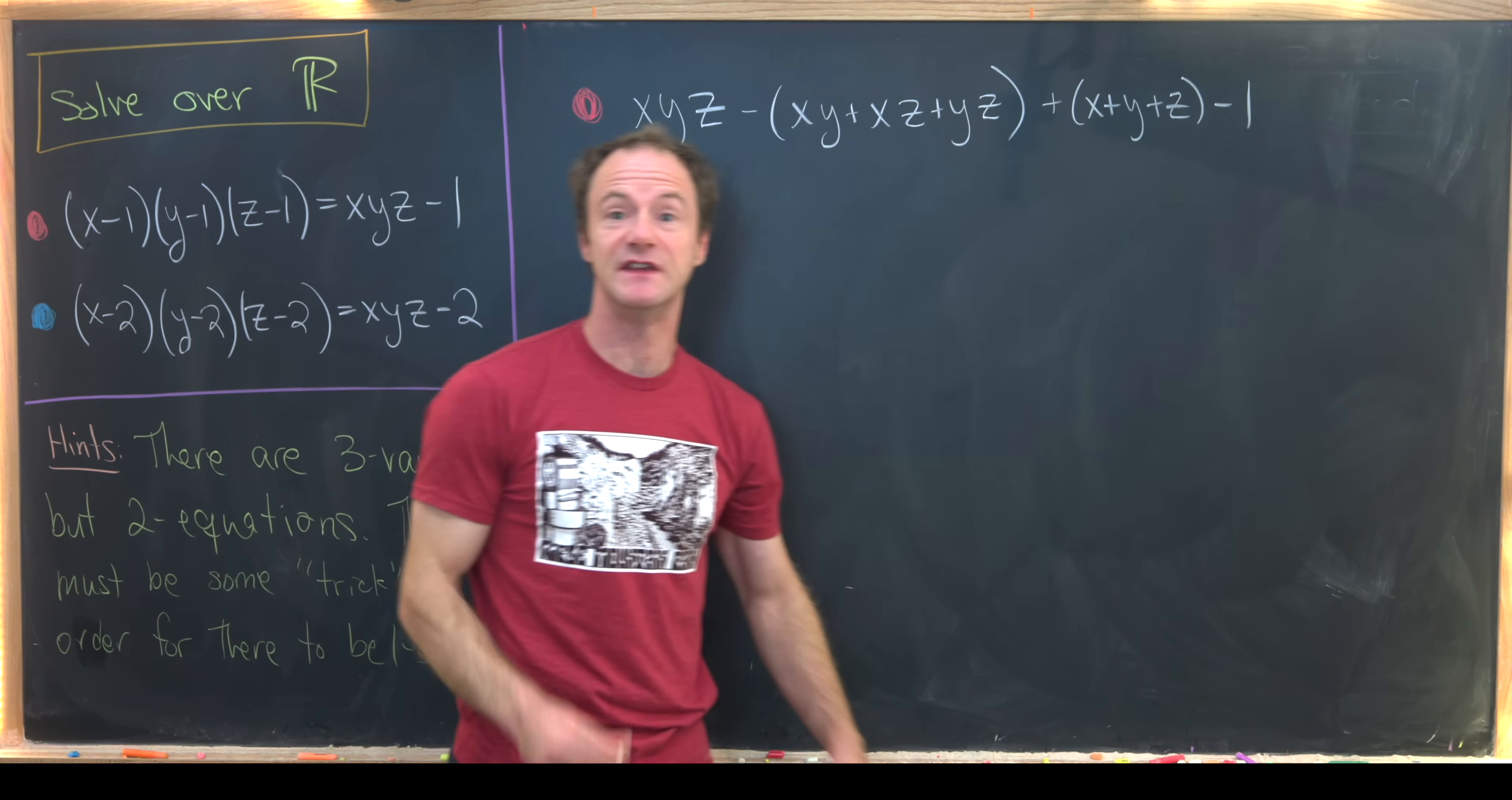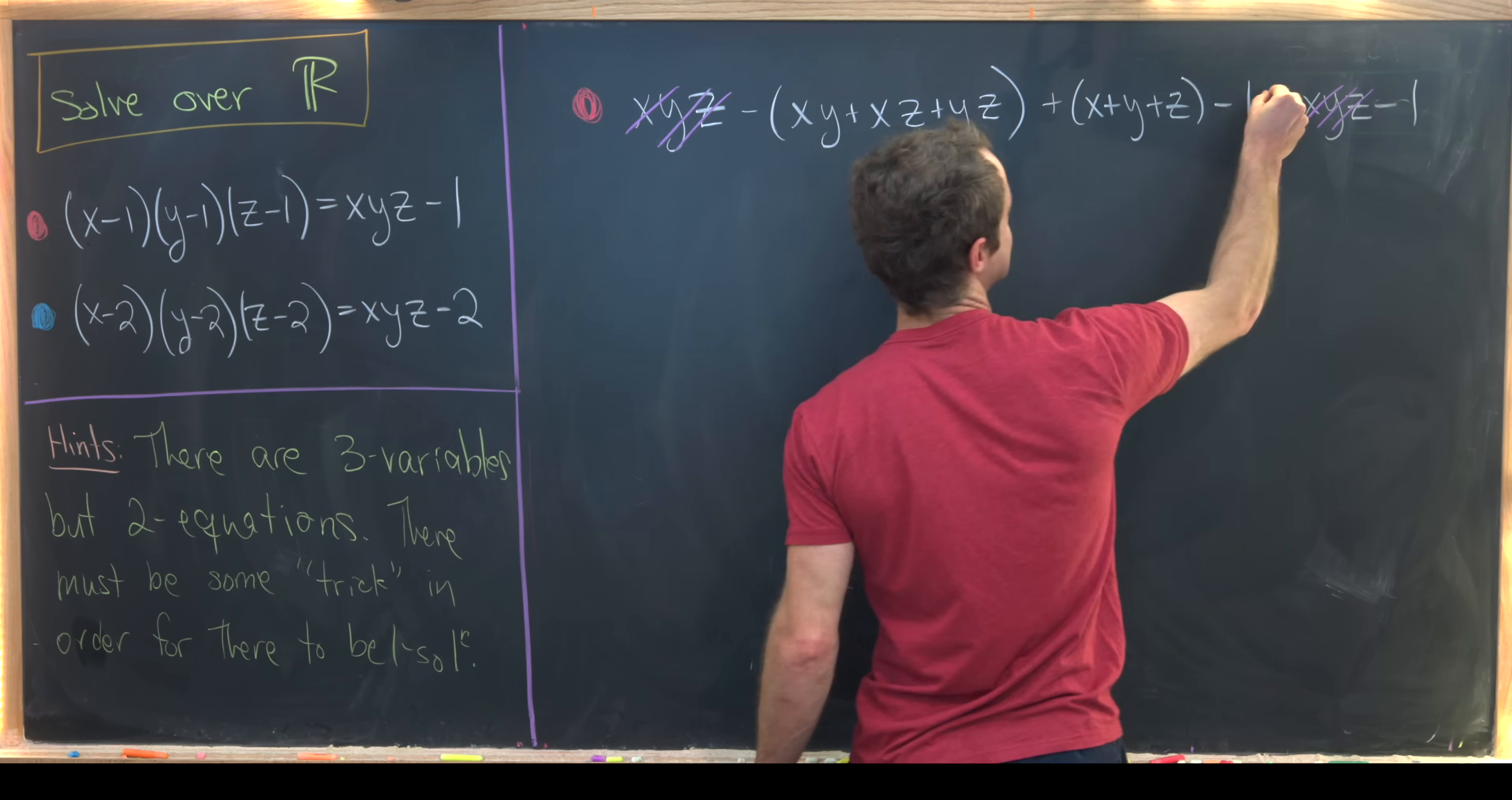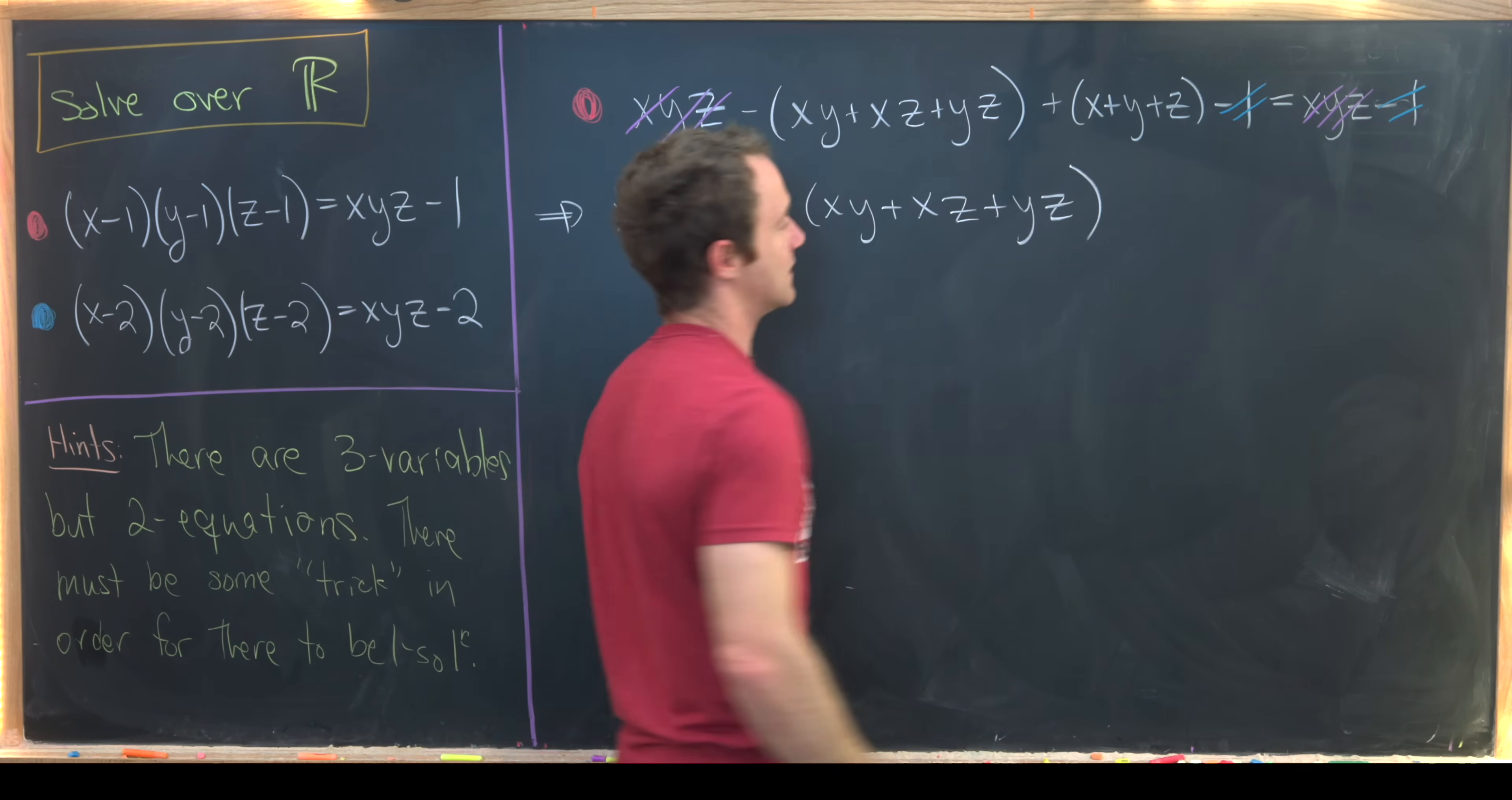Notice we've got something going on with these symmetric polynomials. On the other side of the equation we have xyz - 1. Now we can start simplification. Notice xyz cancels and the negative 1 cancels, and we can move some stuff around to see that we've got this equality. In fact, we know that x + y + z equals xy + xz + yz.